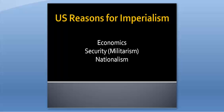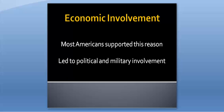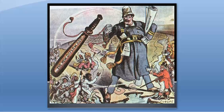The U.S. did practice imperialism in the early 20th century. Their reasons included economics, security or military reasons, and nationalism. While many Americans did not desire to conquer other lands, they did support economic reasons for imperialism. What they soon discovered, however, was that economic involvement in other countries leads to political and military involvement in those same countries.